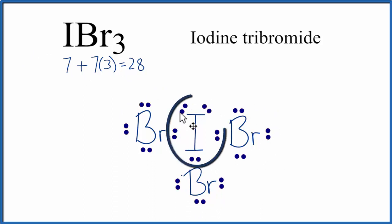And the central iodine has 2, 4, 6, 8, 10 electrons, but that's okay because iodine can have an expanded octet. This is Dr. B with the Lewis structure for IBr3, iodine tribromide. Thanks for watching.